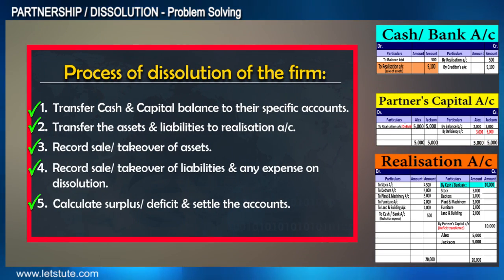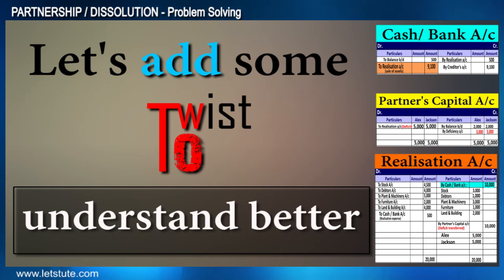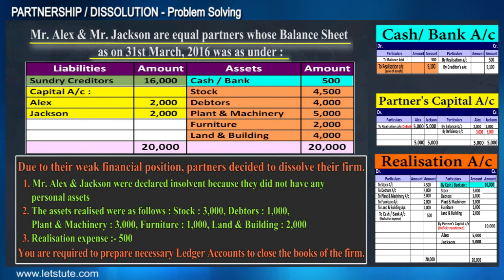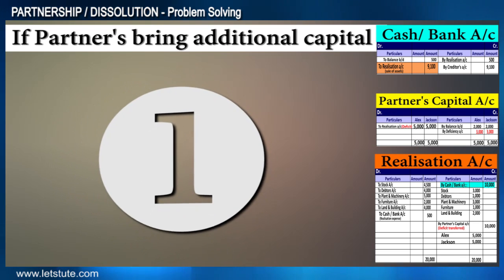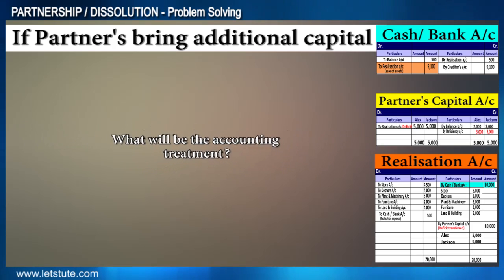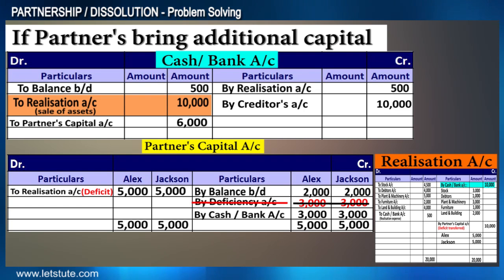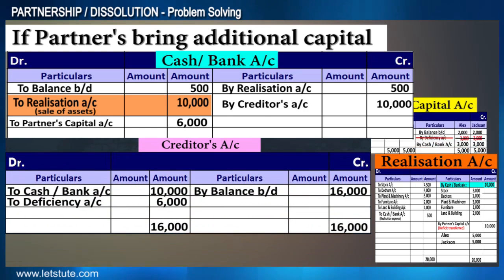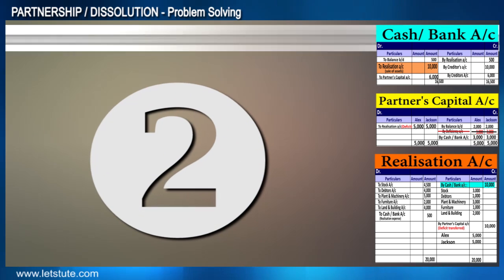With the help of these five steps we solved the whole problem quickly. Now let's add some more twists. What if the partners had brought additional capital to pay the creditors? There would not be much difference — instead of transferring the partners' capital balances to the deficiency account, we would record the cash brought in by the partners, and creditors would be settled by debiting an additional 6000. Thus all accounts are settled.